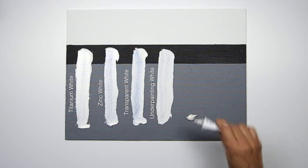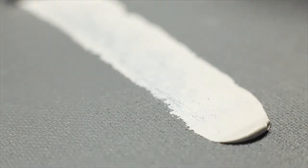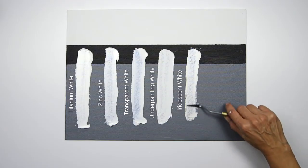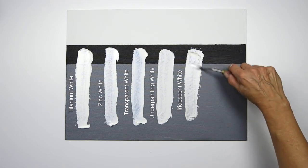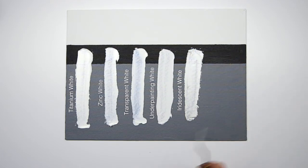And then we have iridescent white which has got a really nice pearlescent sheen to it. It's quite transparent and when you mix it with other colors it gives it a really good strong iridescence.